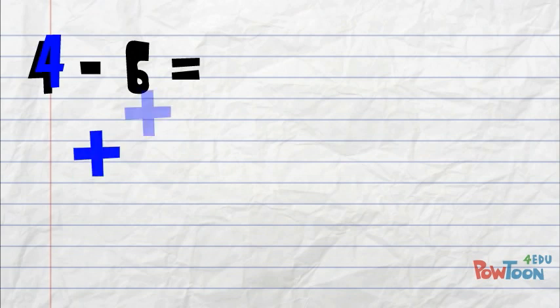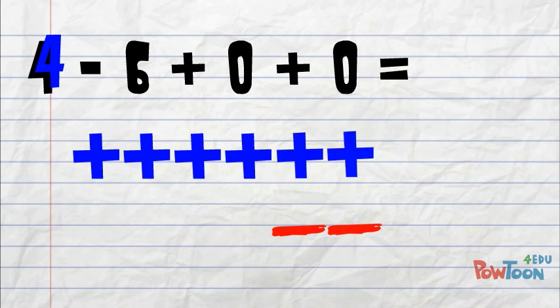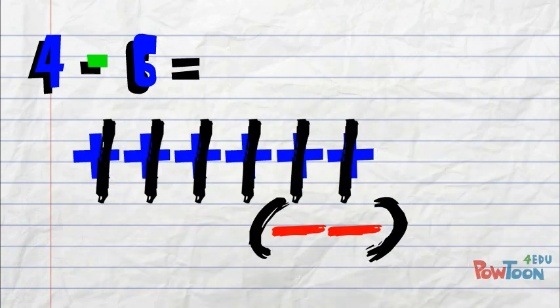So let's see how zero pairs help us with problems like 4 minus 6. We start once again with 4 positive tiles. Since we don't have enough tiles to take away positive 6, we ask our zero pair friends to come help out. We bring out enough zeros, or zero pairs, until there are enough tiles to complete the problem. Now we can take away positive 6, which gives us negative 2.